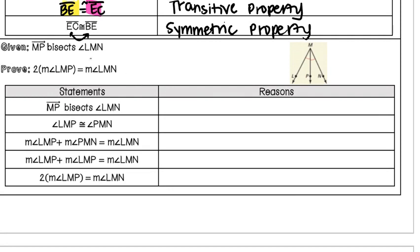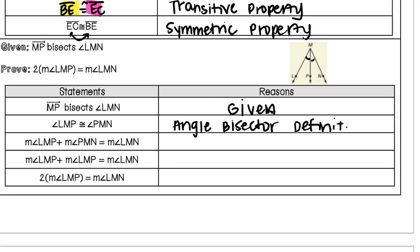In our next proof, ray MP bisects angle LMN, and it's already marked as two separate congruent angles. We're asked to prove that two times the measure of angle LMP equals the measure of angle LMN. All the statements were filled in, so we need to supply the reasons. The first statement matches what was given, so the reason is 'given.' The next line says angle LMP is congruent to angle PMN — we use the definition of angle bisector, since we were told it was being bisected.